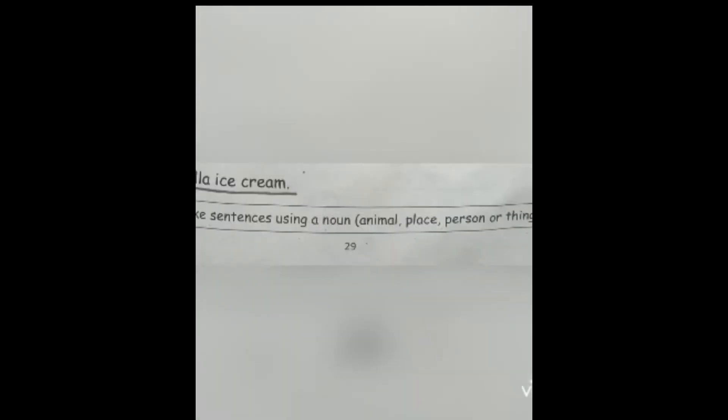After underlining, now at the bottom you can see the copy work. Make sentences using a noun: animal, place, person or thing, two each. Now take out your English copies and make the sentences of two animals, two places, two persons and two things. This is your copy work, making sentences in your copy.